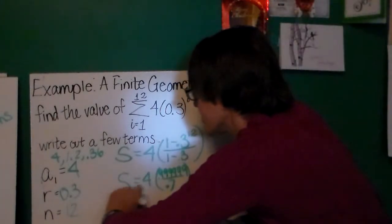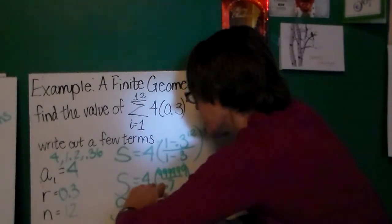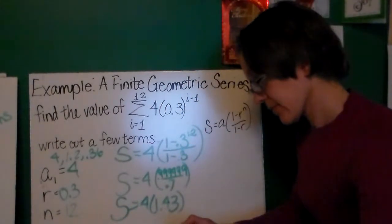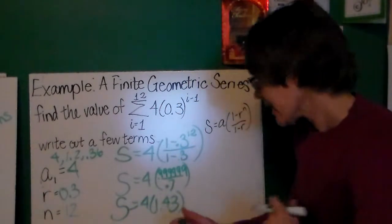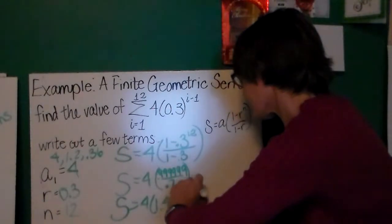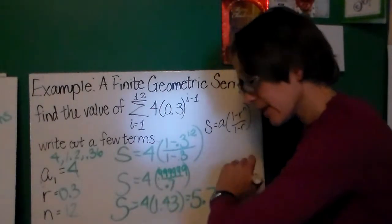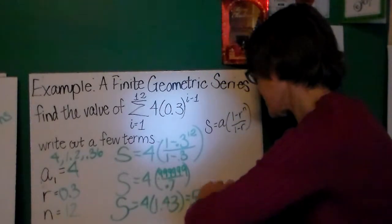So dividing this by 0.7, I get 1.43. So I have s equals 4 times 1.43. And I get 5.7. Wow. It definitely looks like this isn't even going to hit the 7 that I predicted it would go to.